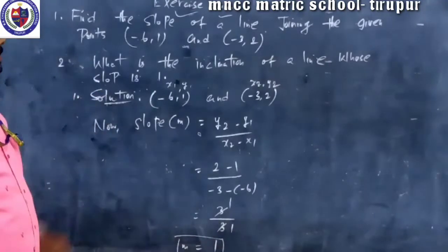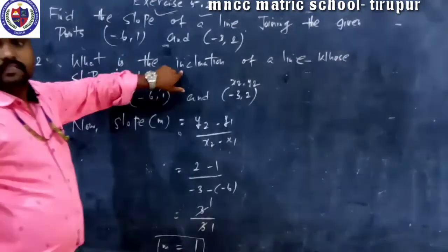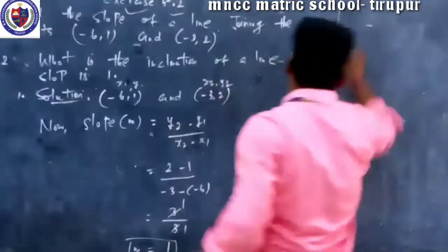Second question: What is the inclination of a line whose slope is 1? If the value 1 could start, the inclination I am with theta. This is already formed right for your form. Second one.